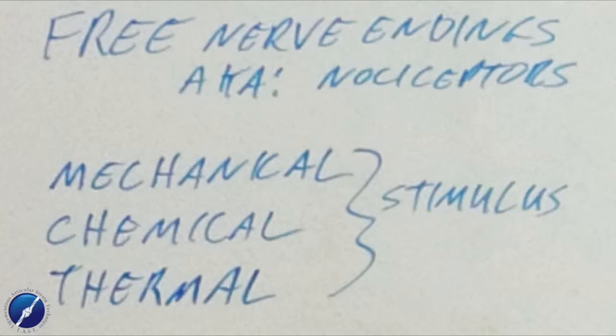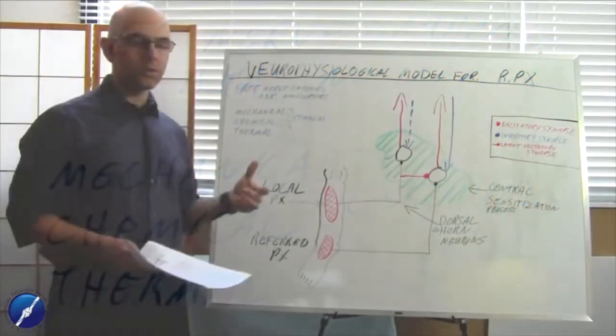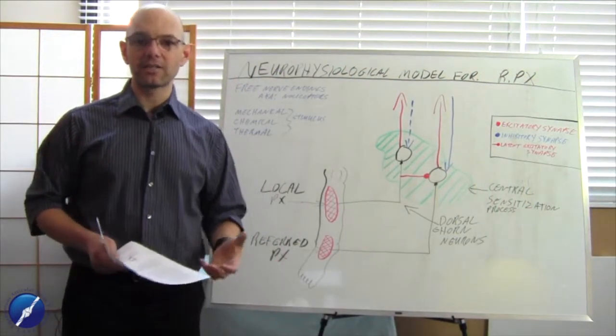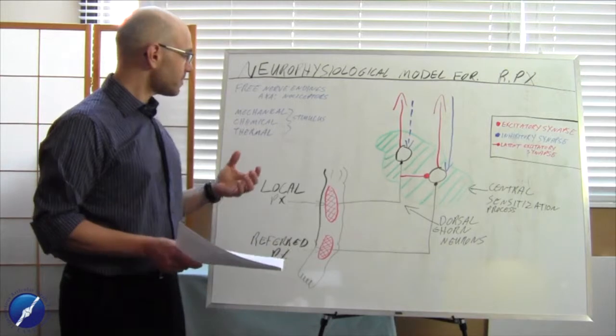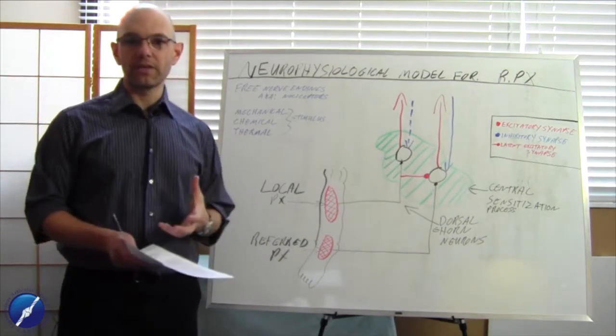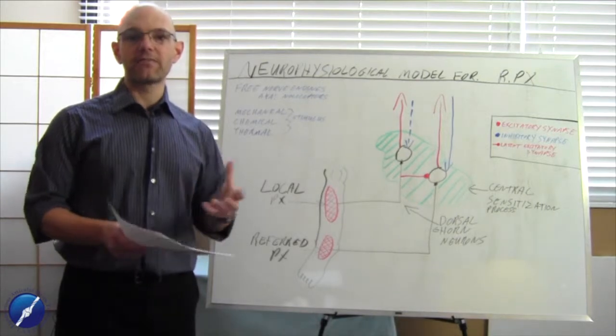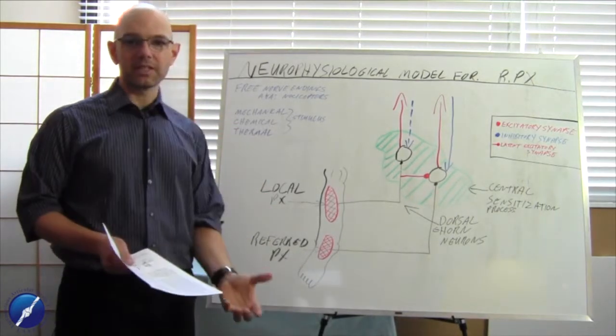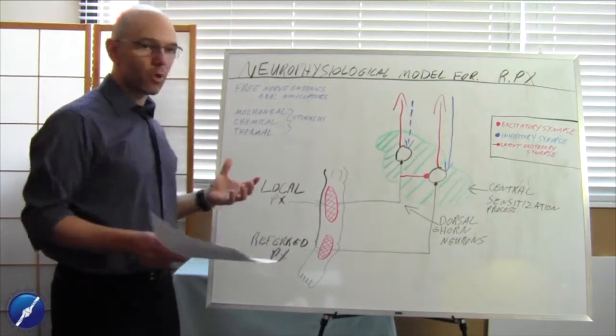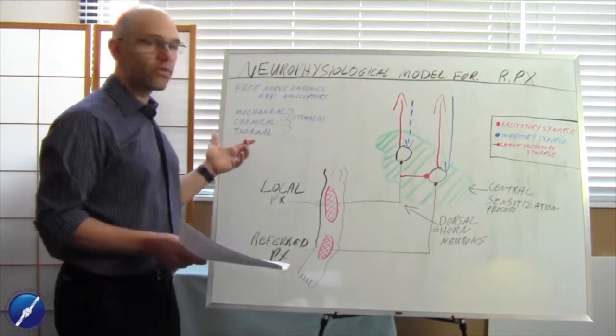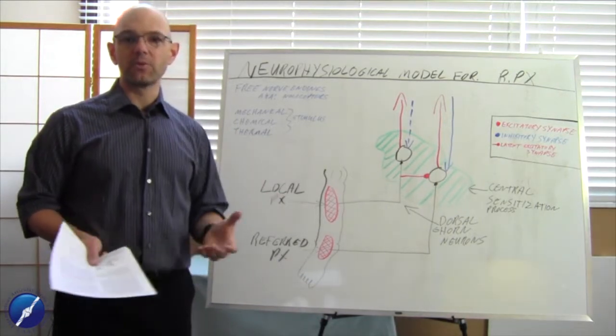A couple other things we need to remember is that we can stimulate these nociceptors either mechanically, chemically, or thermally. So you banged your knee on the coffee table, that's a mechanical stimulation. You banged your knee on the coffee table or you sprained your ankle or your knee and you had an inflammatory response that occurred, well that's a chemical sort of stimulus that can occur.